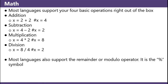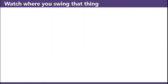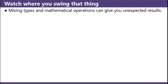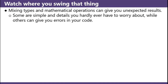Most languages also support the remainder or modulo operator. It is the percent symbol. X equals 1 mod 3; x now equals 1 because when you divide 1 by 3 you have a remainder of 1. Watch where you swing that thing. Mixing types and mathematical operations can give you unexpected results. Some are simple details you hardly ever have to worry about, while others can give you errors in your code.